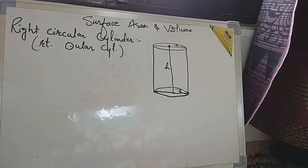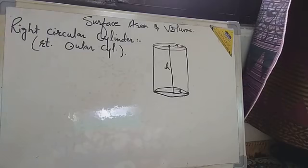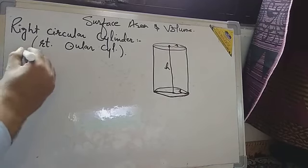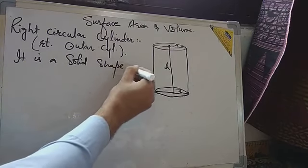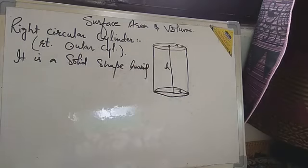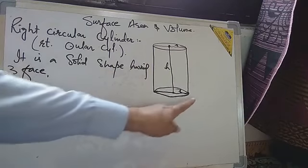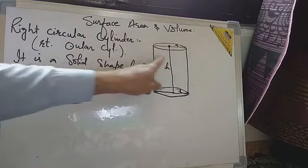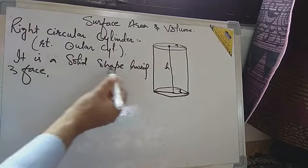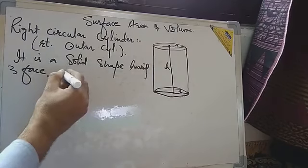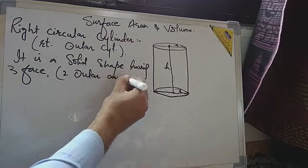This is the formation of a right circular cylinder. Now we have to write its definition. It is a solid shape having three faces — circular face on the bottom, circular face on the top, and the curved side face. It is a solid shape having three faces: two circular and one curved.